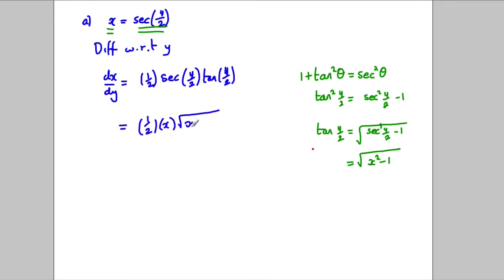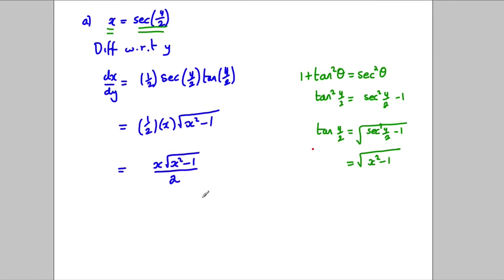Tidying up: I can write a half times x times √(x² - 1), which gives dx/dy = x√(x² - 1)/2. But I didn't want dx/dy — I want dy/dx.